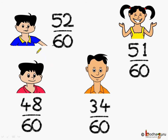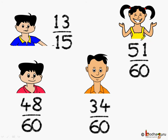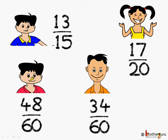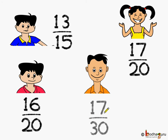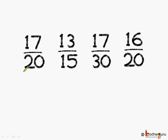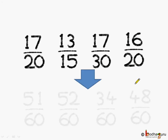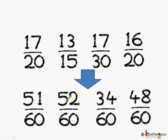Now let's replace the equivalent fractions with their original fractions. Rajat got 13 out of 15. Khushi got 17 out of 20. Anand got 16 out of 20. And Aman got 17 by 30. The order remains the same — Rajat got the highest and Aman got the lowest score. Their equivalent fractions are 51 by 60, 52 by 60, 34 by 60, and 48 by 60.